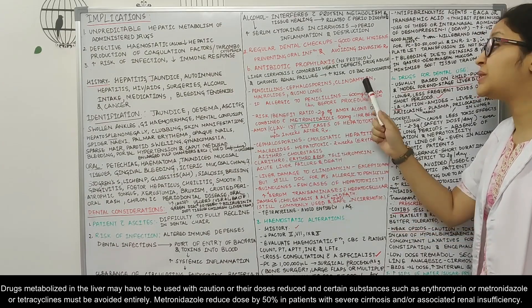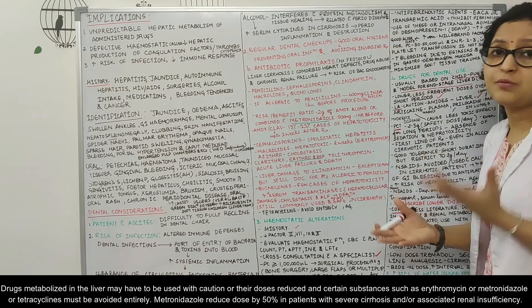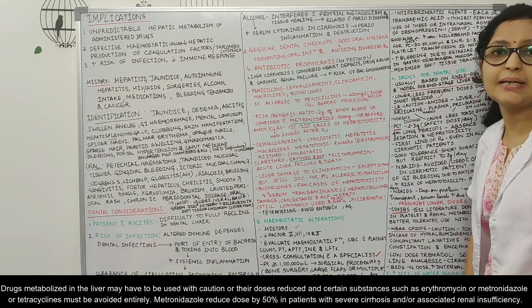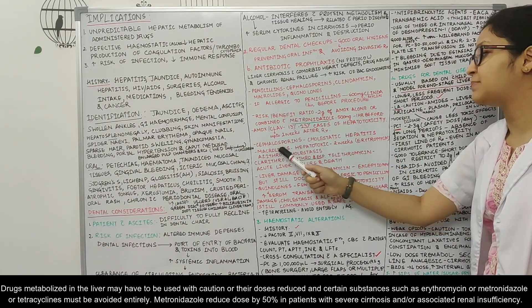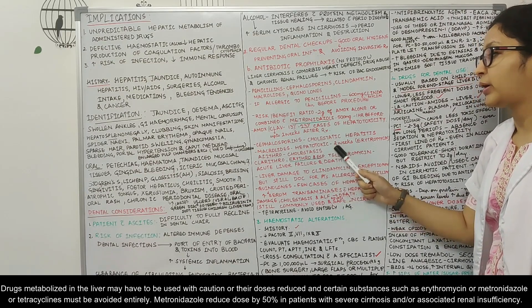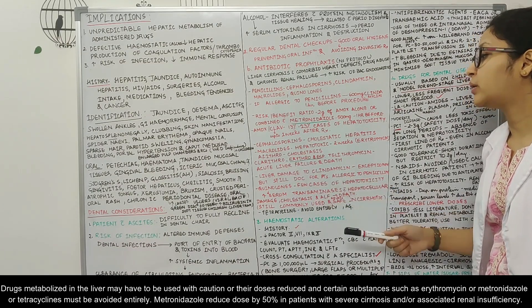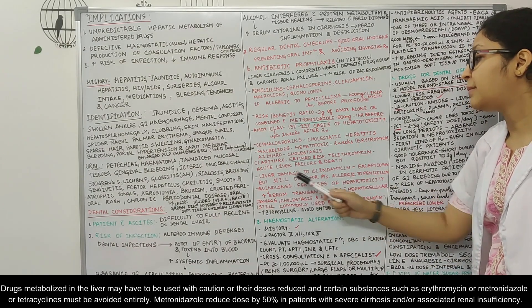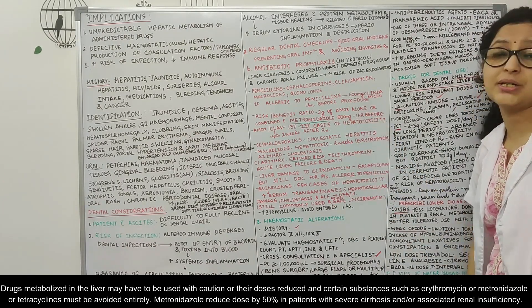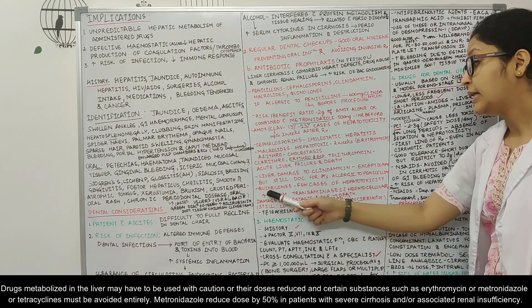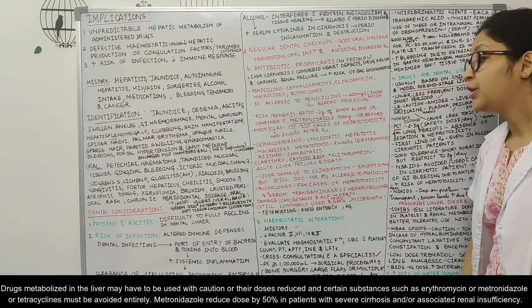So clindamycin also has a risk of liver damage but still if the patient is allergic to penicillins we need to weigh the risk-benefit ratio and we can give clindamycin in such patients. Another thing, cephalosporins they can cause cholestatic hepatitis, macrolides are also hepatotoxic, then even erythromycin, all these things can cause acute liver failure and death. So liver damage can occur due to clindamycin also but still it is the second drug of choice if the patient is allergic to penicillin.